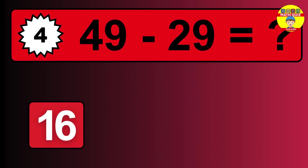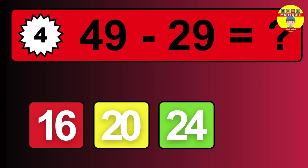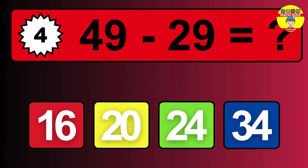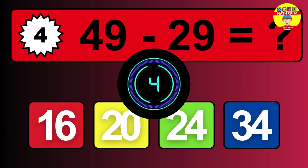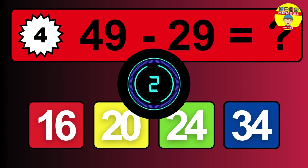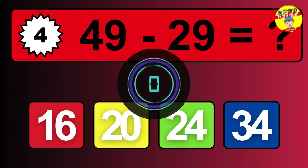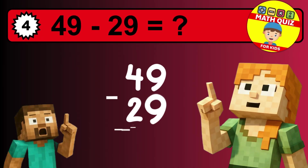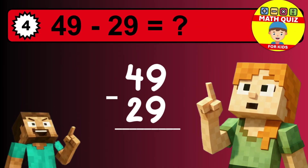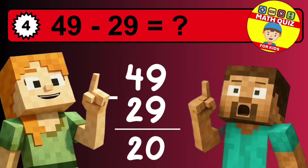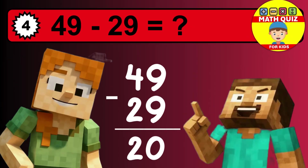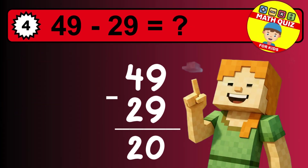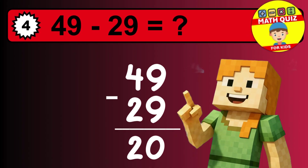What is 49 minus 29? Time to think. Let's solve this step by step. We start with the units: 9 minus 9 is 0. Then we go to the tens: 4 minus 2 is 2. The final answer is 20.